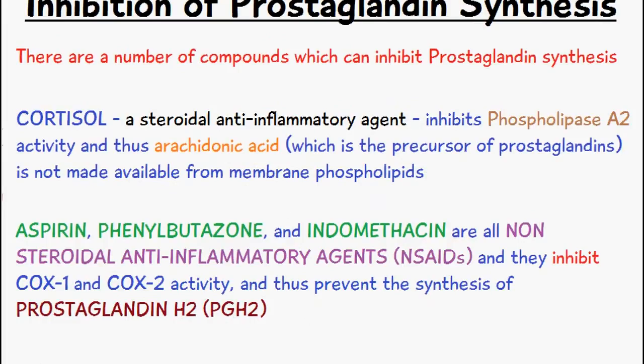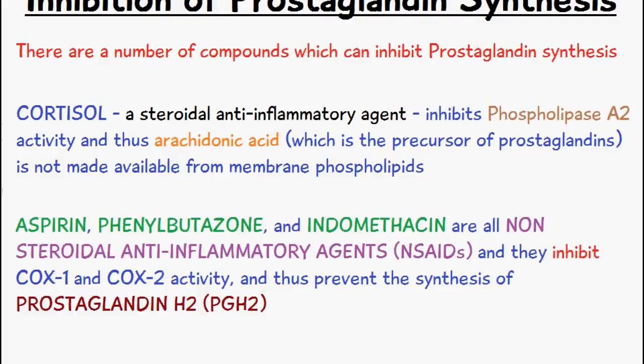The next group I want to talk about is aspirin, phenylbutazone, and indomethacin, which are all non-steroidal anti-inflammatory agents. What they do is inhibit COX-1 and COX-2 activity. As noted in the previous video, COX-1 and COX-2 are isoenzymes — fatty acid cyclooxygenases present in the PGH synthase enzyme complex.